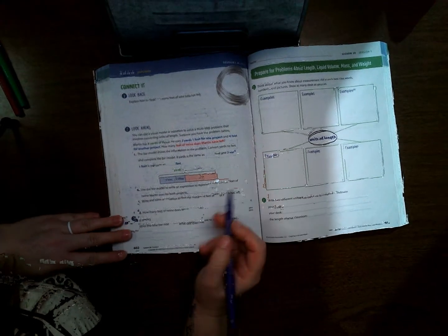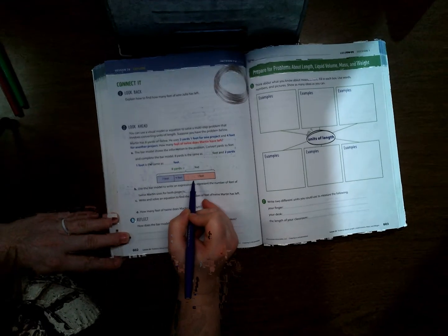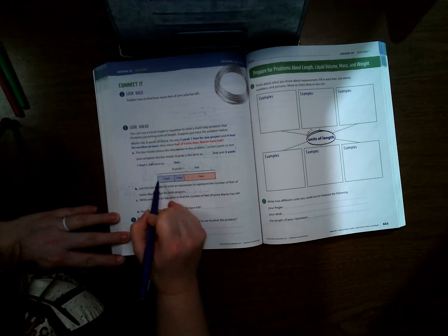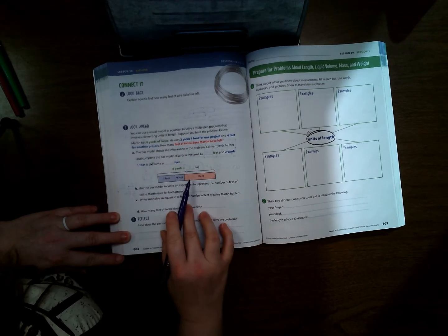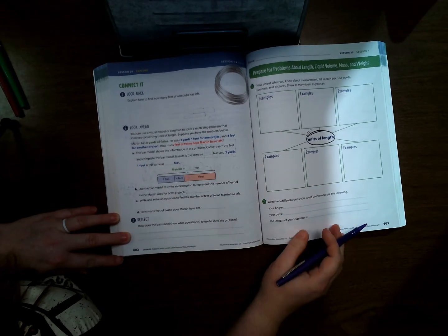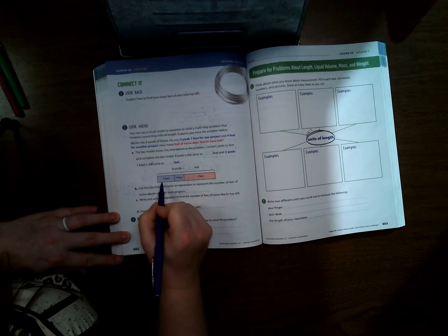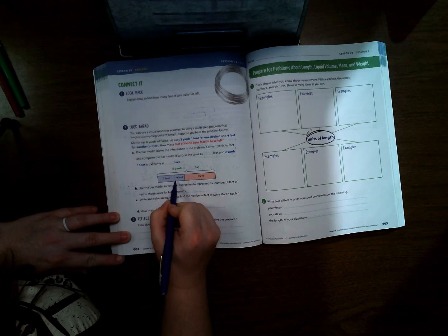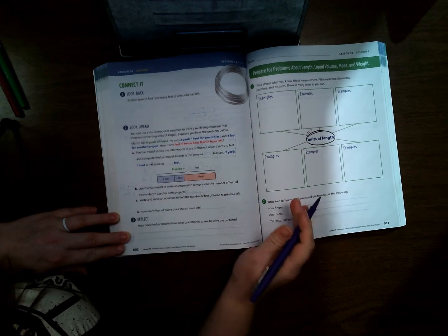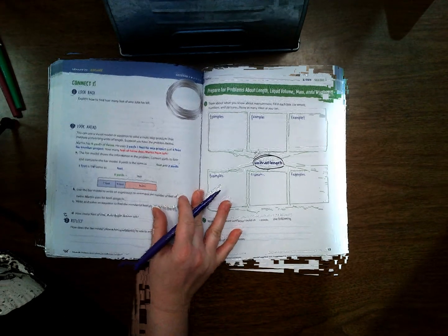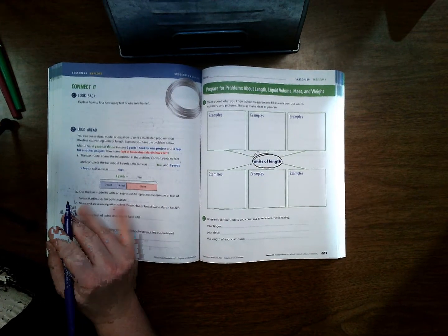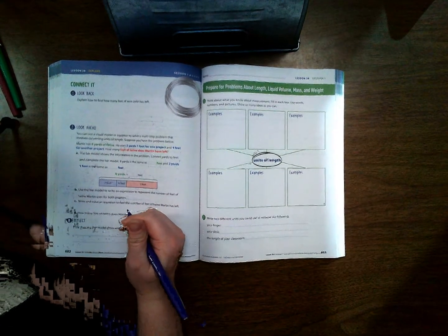Let's go ahead and turn to page 602. On 602 we can look here and see where they converted. This is the same problem. We're going to go ahead and skip over to our green pages here on units of length.